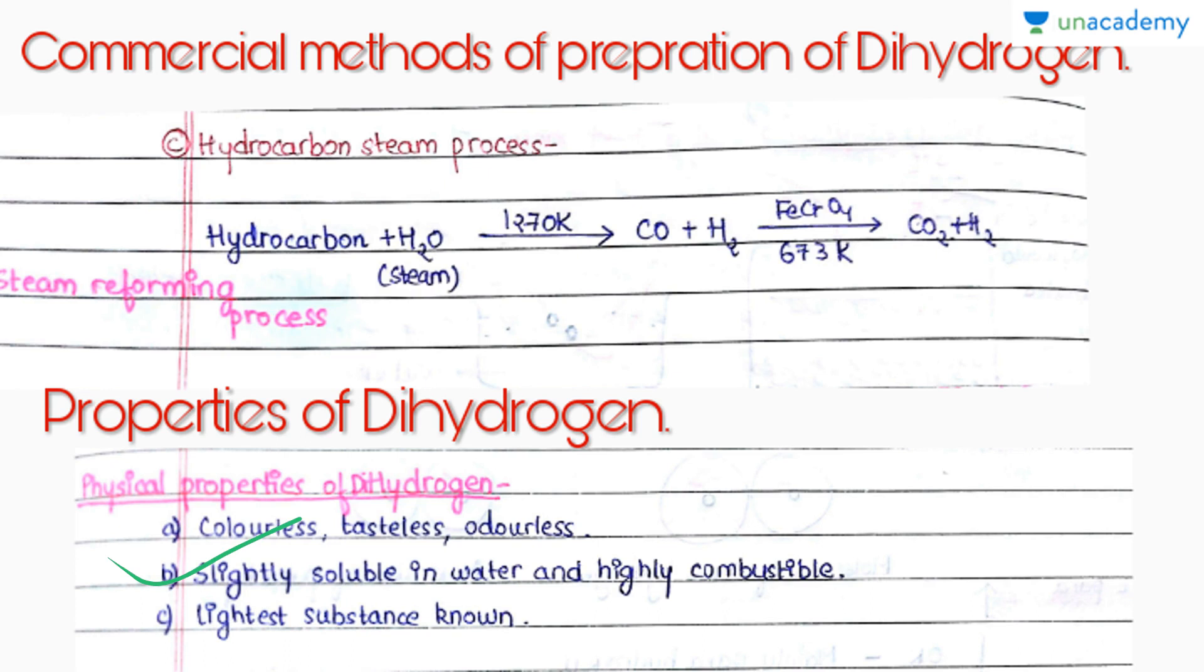Some properties of dihydrogen are: it is a colorless, tasteless, and odorless gas. It is slightly soluble in water and it is highly combustible, which means that it supports combustion to a very high extent. It is the lightest substance known.